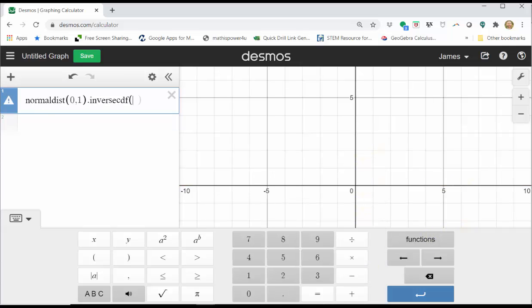Inverse CDF. Enter the area to the left of the z-score, which again is 0.975. Let's round the z-score to 1.96.